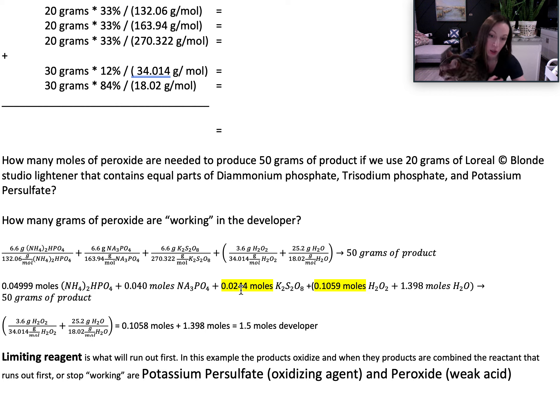which interestingly enough, when potassium and sulfate are mixed together, they oxidize producing a little bit of peroxide on the reactant side. The peroxide was the limiting reagent on the developer side.